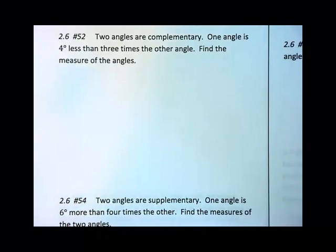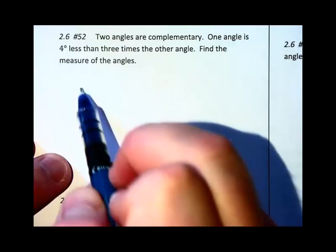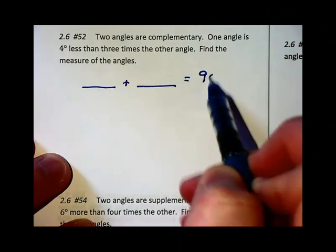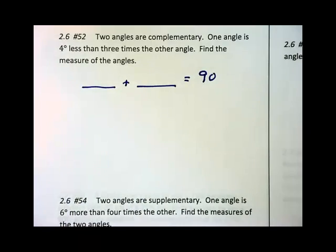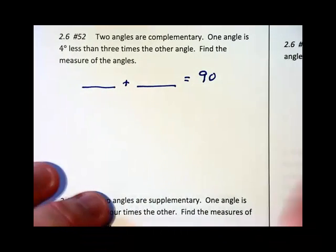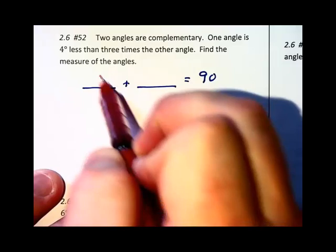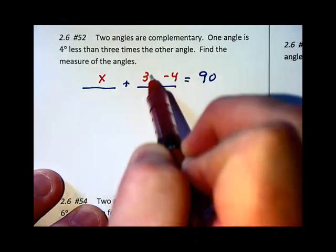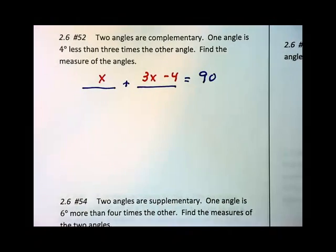Two angles are complementary. Automatically I know I've got something plus something adds up to 90 degrees. One angle is four less than three times the other. If one of them is x, four less than three times the other, I have 3x minus 4 for the other.